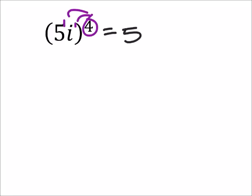This gives us 5 to the power of 1 times 4 is 4, times i to the power of 1 times 4 is 4 once again.